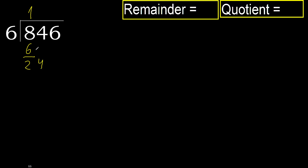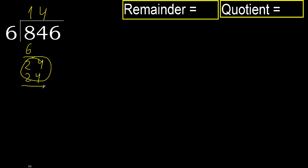Bring down: 20. 6 multiplied by 5 is 30, which is greater. Multiplied by 4, 24 is not greater. Ok. Subtract: 24 minus 24 equals 0. Next.